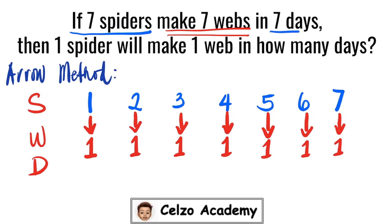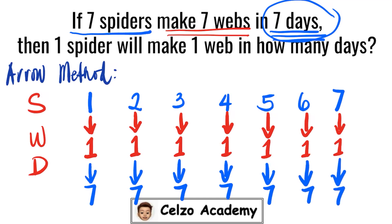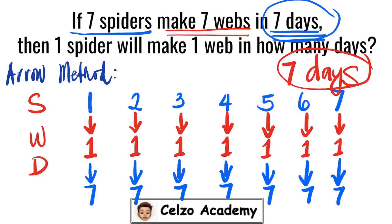Seven spiders make seven webs in seven days, so every spider works for seven days. Spider one makes one web in 7 days, and the same applies to each of the other spiders — spiders two through seven each also take 7 days. So the answer is 7 days: one spider will make one web in 7 days.